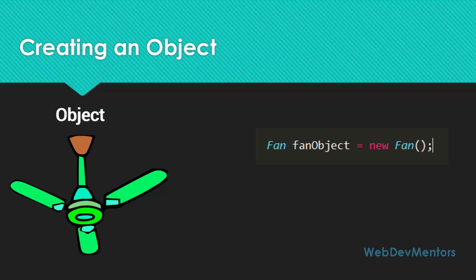You can have multiple instances of a class, meaning you can create multiple objects for a class. So I am going to create another object for the fan class. The code will look like this: Fan fanObject2 — the second object — is equal to new Fan. So I have two objects and they are not going to conflict with each other. They will have different variables and different methods.